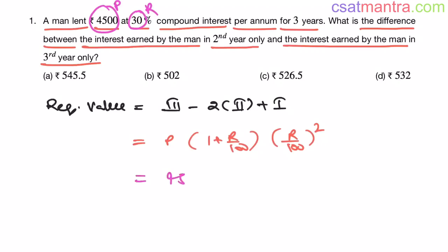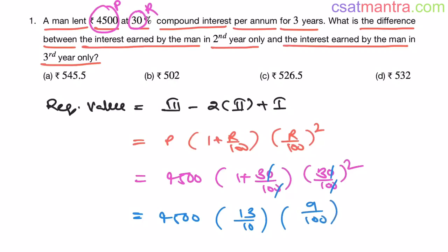Let us substitute the values now. 4,500 into 1 plus R is 30 into 30 by 100 whole square. 0, 0 cancels out. This is 45 into 13 by 10 into 9 by 100. 3 by 10 whole square, my friends. 9 by 100. Now, see 2 zeros, 2 zeros cancels out.